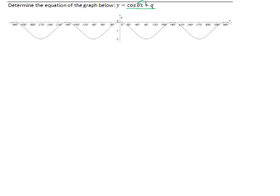The b value influences the period of the graph, and the q value influences the vertical shift of the graph. We are looking at a graph that has had its period changed and that has been shifted vertically.